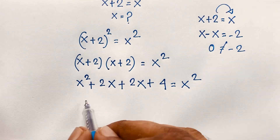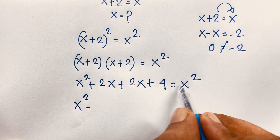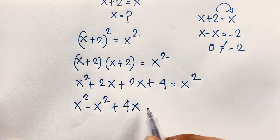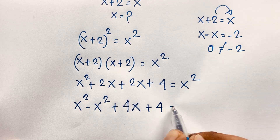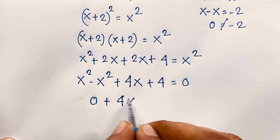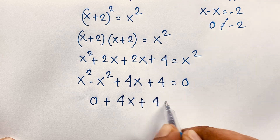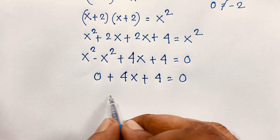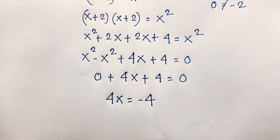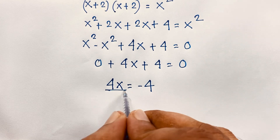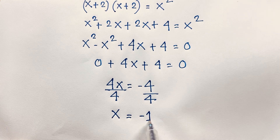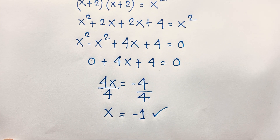Now you can see here is x squared, and if I move this x squared to the other side it will be negative x squared, plus 2x plus 2x it will be 4x, then positive 4 is equal to 0. Now x squared minus x squared it will be 0. Then here is 4x plus 4 is equal to 0. We will find out 4x is equal to negative 4. I move this positive 4 to the other side, it will be negative 4. Then I divide both sides by 4. We find out x is equal to negative 1. So our final answer is x is equal to negative 1.